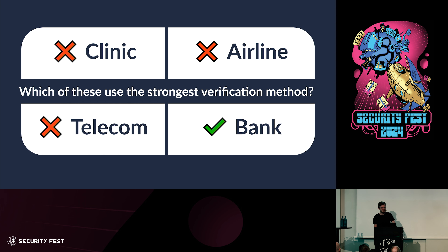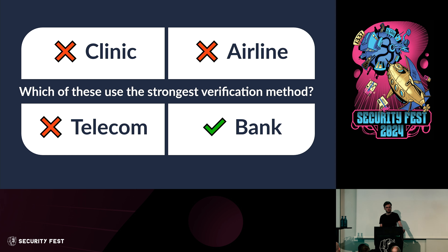To answer the question: how many organizations use the strongest verification method? Only one out of three — only the bank. All the lower-tier risk organizations, such as the telecom company which is still very high risk, use just the plain visual verification method.